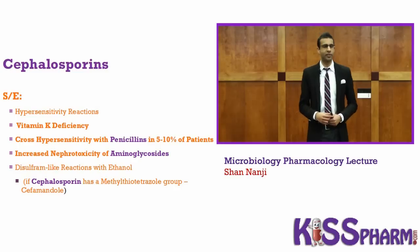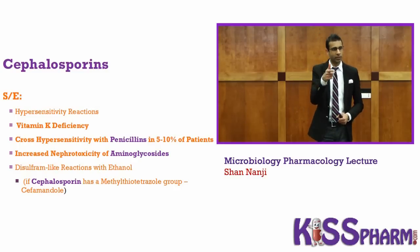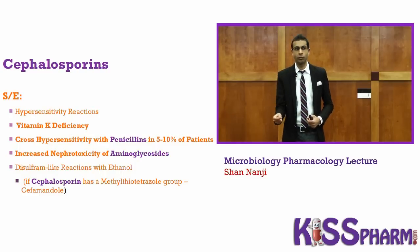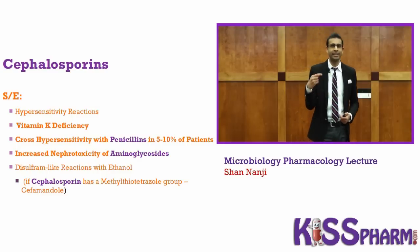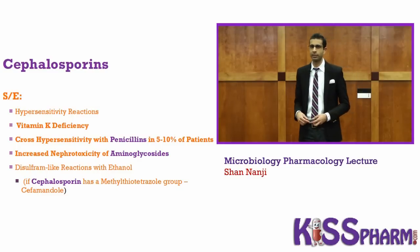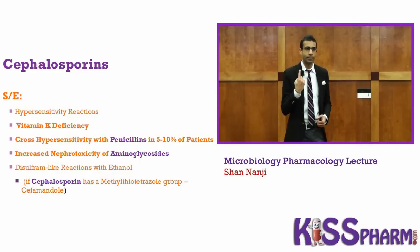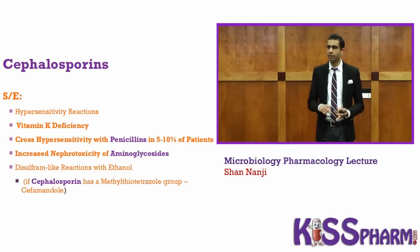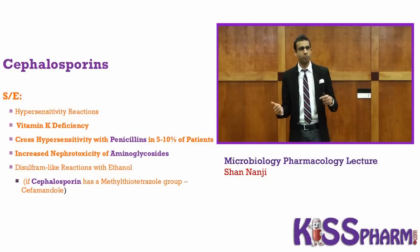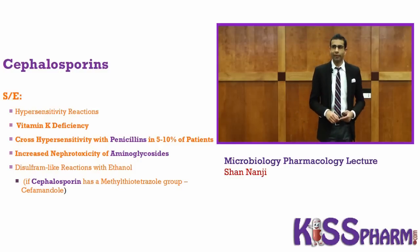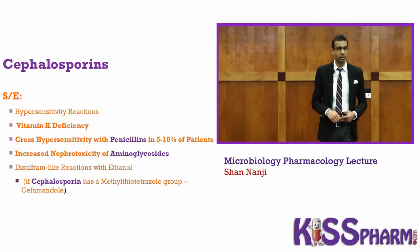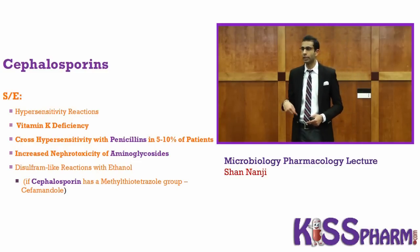Look at the side effects. There's a hypersensitivity reaction, but the next one on the list is very important: cephalosporins can cause a vitamin K deficiency. Remember, vitamin K is important for clotting factors 10, 9, 7, 2, protein C and S. Any time you have a clotting factor problem, you bleed into your cavities. If you have a platelet problem, you bleed from your skin and mucosal surfaces.